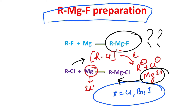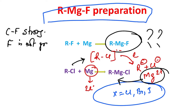But if you do the same thing with fluorine, the issue is that the carbon–fluorine bond is strong. First of all, second: fluorine is not a good leaving group — it doesn't want to leave.